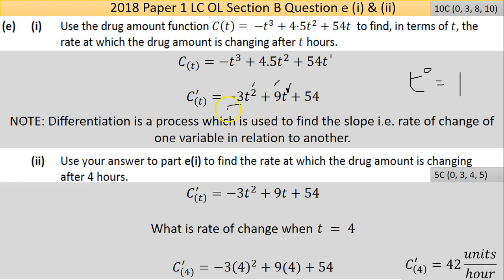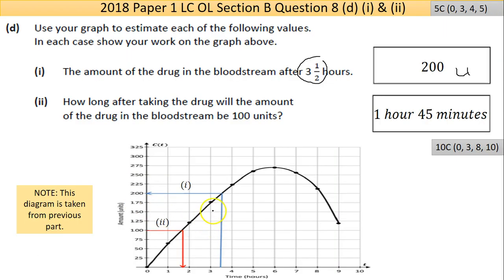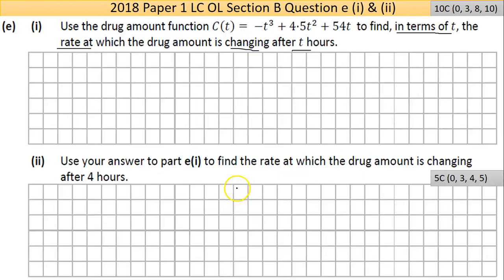Part (e2) says use your answer from part (e1) to find the rate at which the drug amount is changing after four hours. Take your differentiated equation and put in t = 4. That comes out as +42, so the rate of change is 42 units per hour at that point. Remember from the graph, the slope is constantly changing. The rate tells you how quickly the concentration is changing at that specific moment.